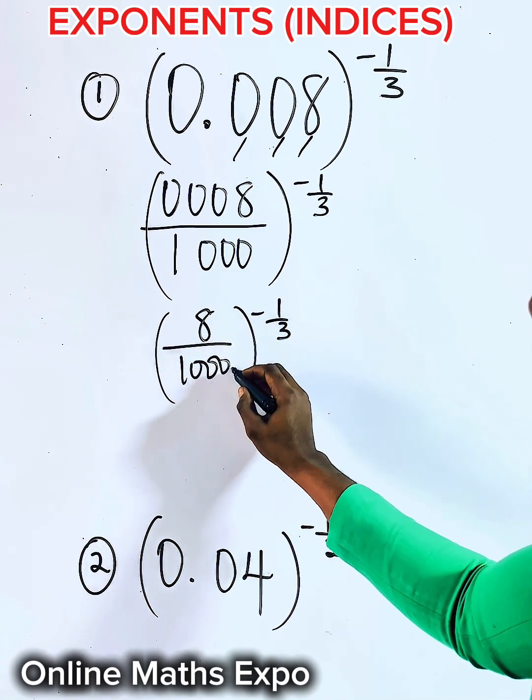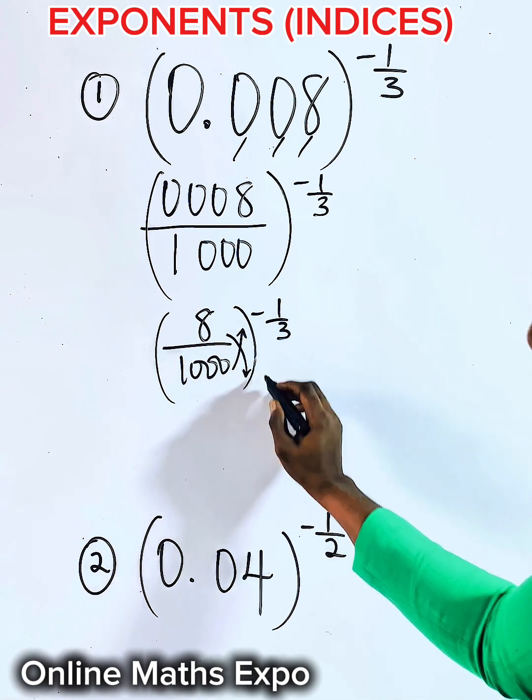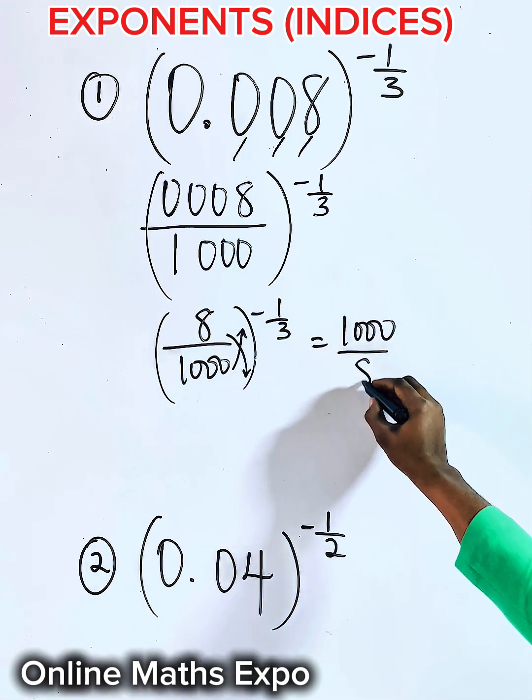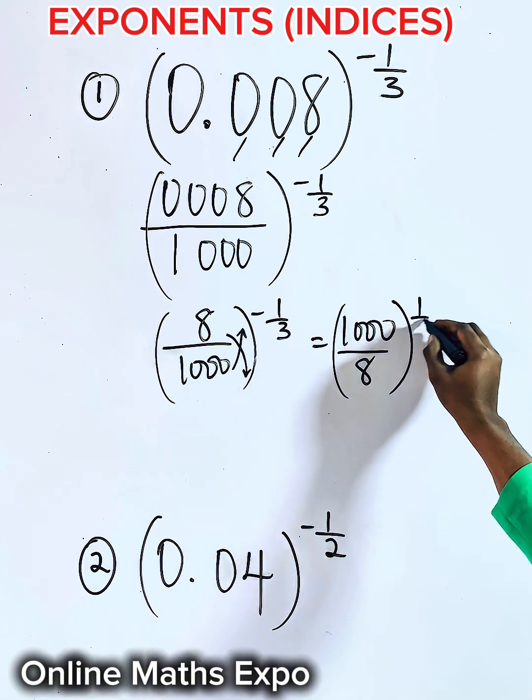To remove this negative power, reverse this fraction inside. So if you do that, you have 1,000 divided by 8 raised to the power of one-third.